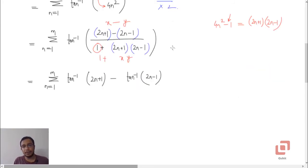Having multiplied and divided by two and having added and subtracted one from the denominator, we have actually written the given term for sm as tan inverse of 2n plus 1 minus tan inverse of 2n minus 1. And we are now in a position that we can actually simplify this.